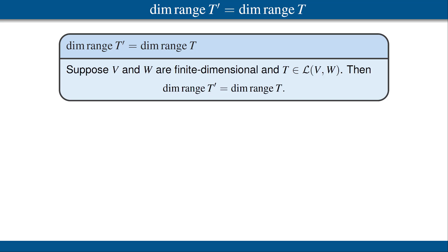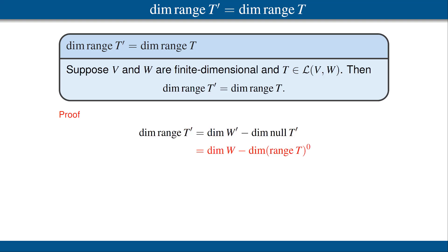We can now prove that if V and W are finite dimensional and T is a linear map from V to W, then the dimension of the range of the dual of T is equal to the dimension of the range of T. The dimension of the range of T prime equals the dimension of W prime minus the dimension of the null space of T prime, by the fundamental theorem of linear maps applied to T prime, which maps W prime into V prime. We've previously proved that the dimension of the dual of W equals the dimension of W, and the null space of the dual of T is the annihilator of the range of T. Finally, we use our formula for the dimension of the annihilator of a subspace, noting that the range of T is a subspace of W.